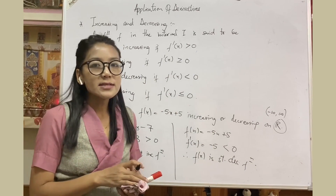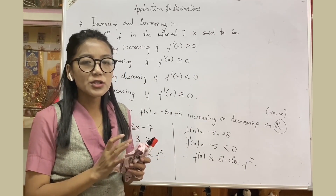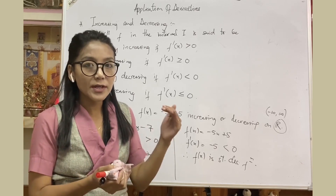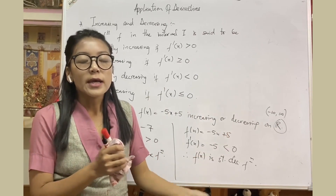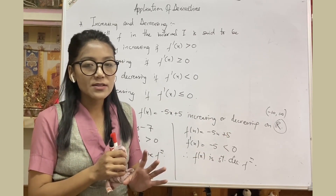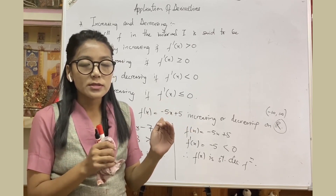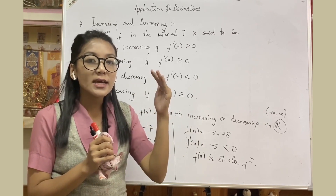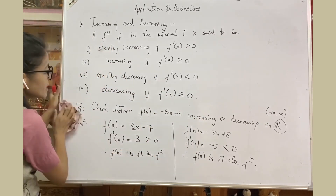It is quite simple to check whether a function is strictly increasing or decreasing when it is purely one or the other. But for a function that is neither increasing nor decreasing — within that interval the function is increasing as well as decreasing. In such a case, how do we find out the nature of the function?